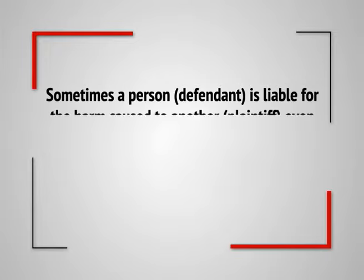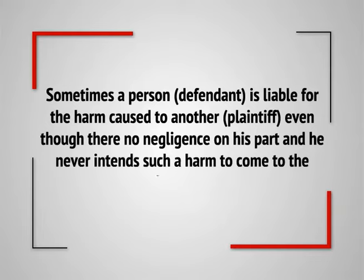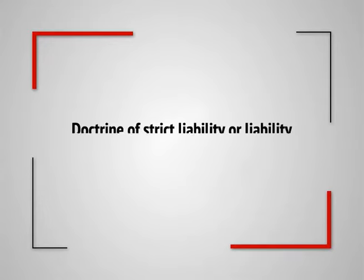This principle is closely related to negligence because the risks involved are so obviously inherent as to be foreseeable. But with this difference: the defendant would be held liable even if he could not by reasonable care avoid the damage. Sometimes a defendant is liable for the harm caused to the plaintiff even though there is no negligence on his part and the defendant never intends such harm. In such cases, even the defense of inevitable accident is not a valid defense. This rule attaches even without any fault on the part of the defendant — this is known as strict liability, or liability without fault.